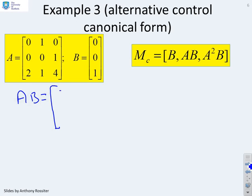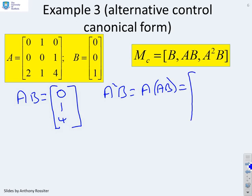So AB in this case is going to be 0, 1, 4. And then we calculate A squared B, which is the same as A into AB, which is going to give me 1, 4, and 17. So now finally, we put this all together. We write MC.